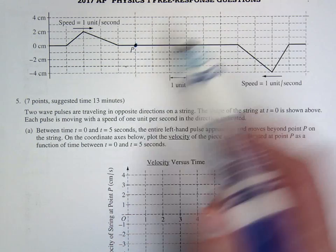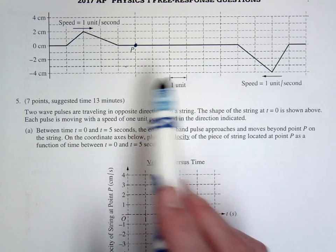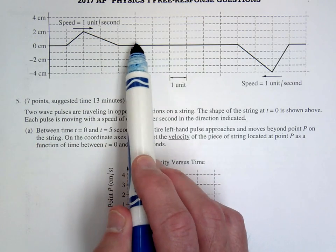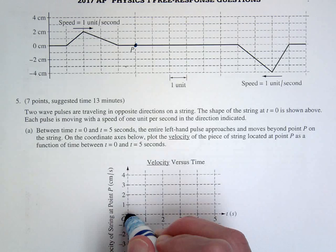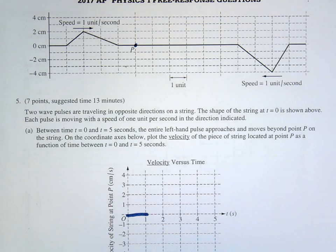And so we just want to find the velocity. Each of these are traveling one unit per second, so after one second this will now reach point P. Notice P hasn't moved yet, so we're just going to say the velocity is zero.